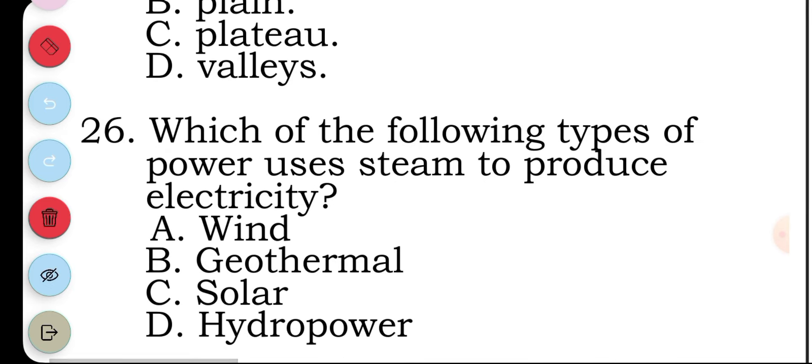Question twenty-six: which of the following types of power uses steam to produce electricity? A wind, B geothermal, C solar, D hydropower. The answer to question twenty-six is B, geothermal.